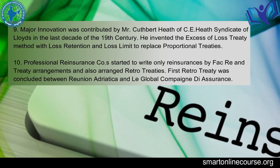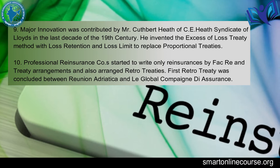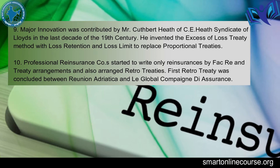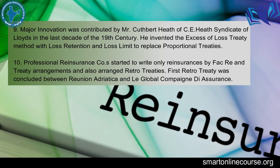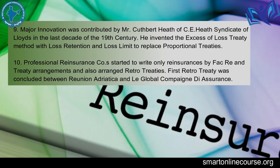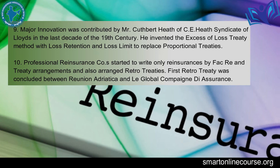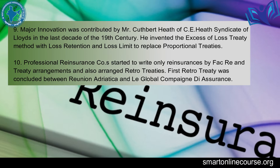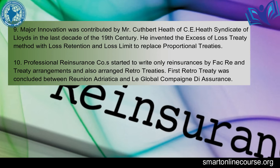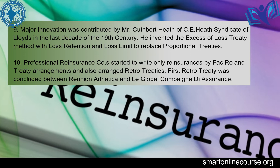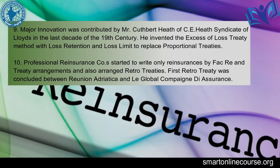The USA also joined the reinsurance market of Europe, and Europeans joined the reinsurance market of the USA. A major innovation was contributed by Mr. C.E. Heath of the C.E. Heath Syndicate of London in the last decade of the 19th century. He invented the excess of loss treaty method with loss retention and loss limit to replace the proportional treaties. Professional reinsurance companies started to write only reinsurances by facultative and treaty arrangements and also arranged retro treaties.